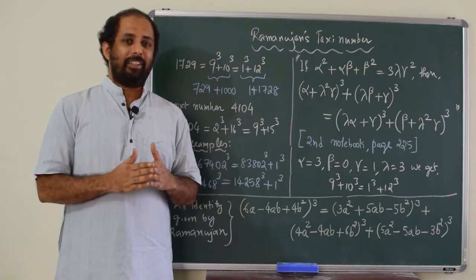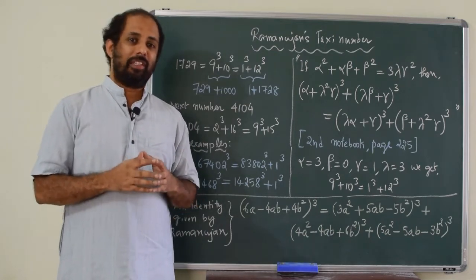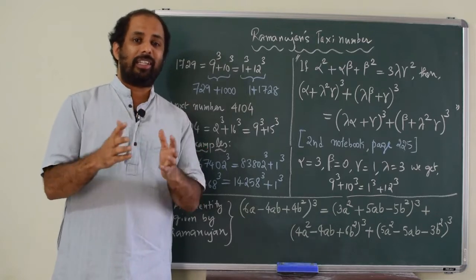And Hardy says that this seems a dull number, inauspicious number, because it is the product of three prime factors 7, 13 and 19.